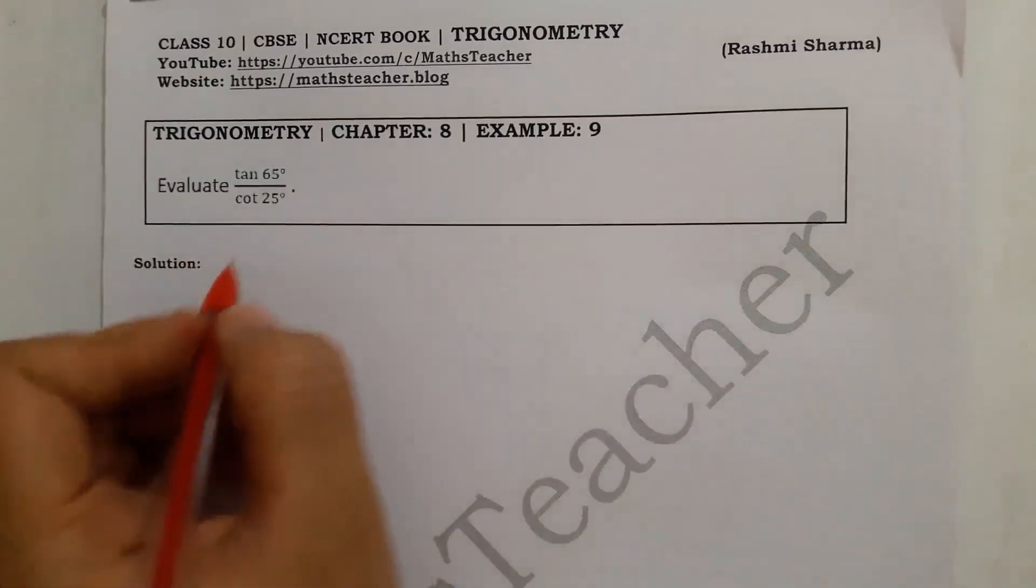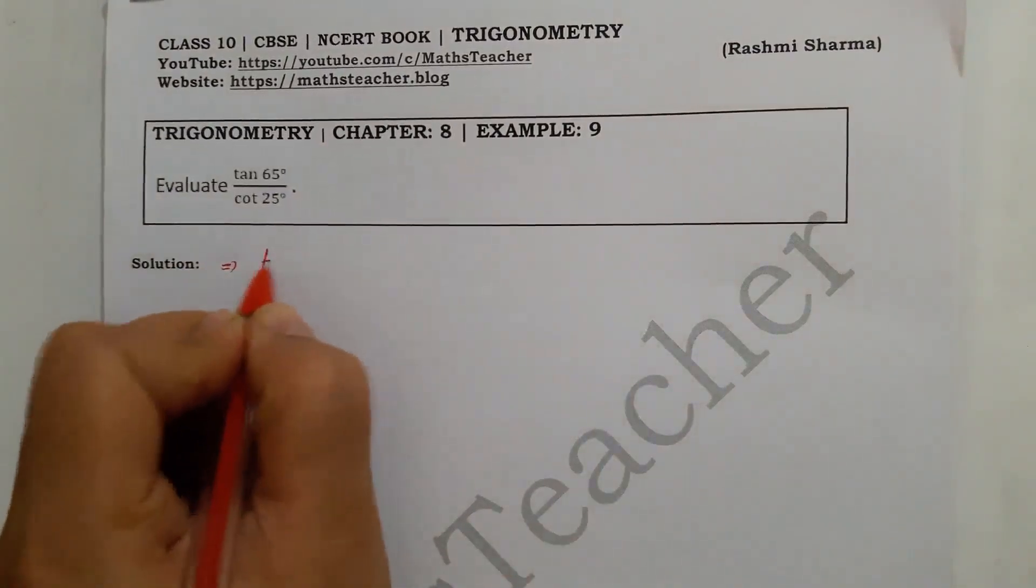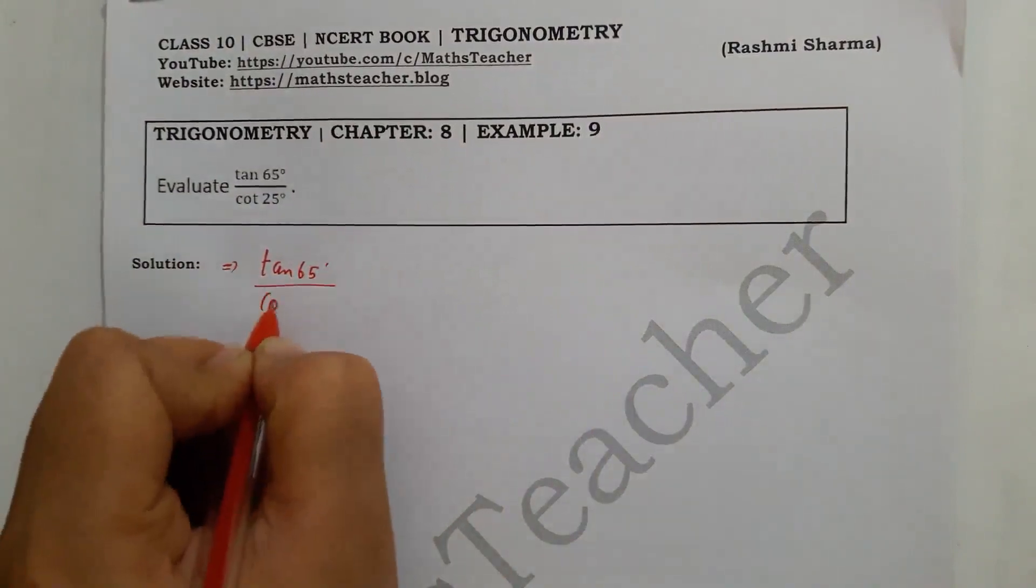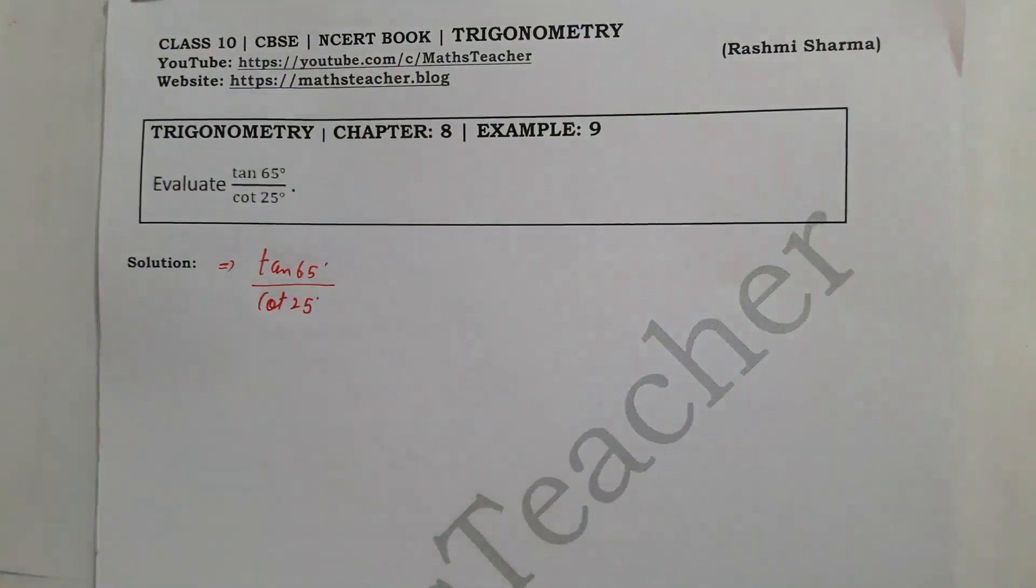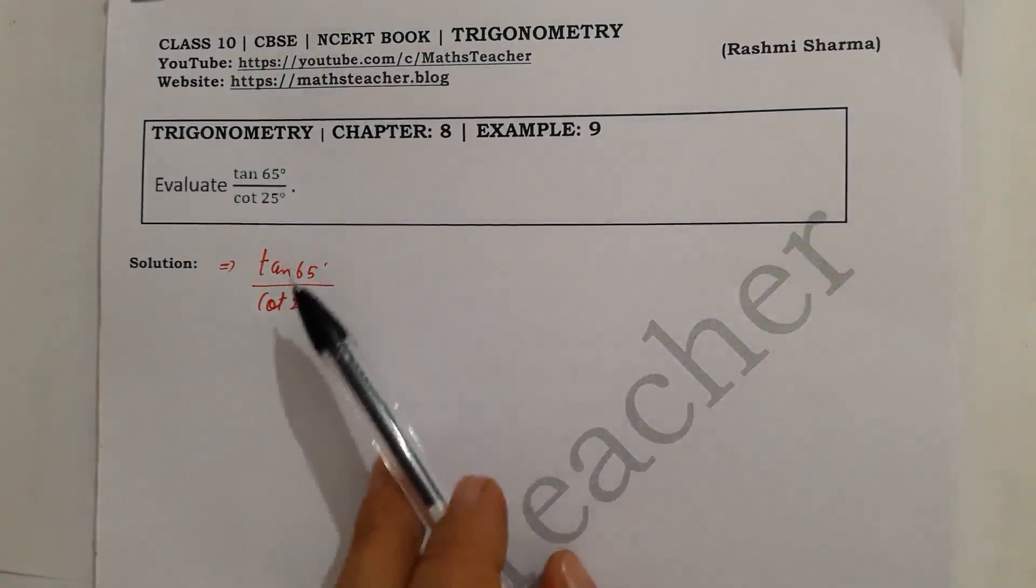So here we are looking at our question: tan(65°) divided by cot(25°). So when you have a question in this way, what do you have to do?